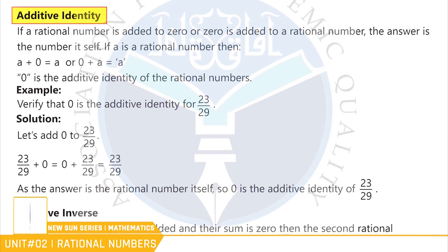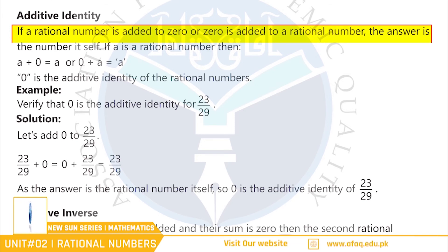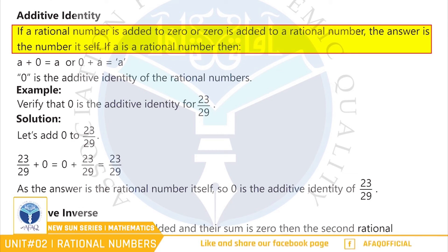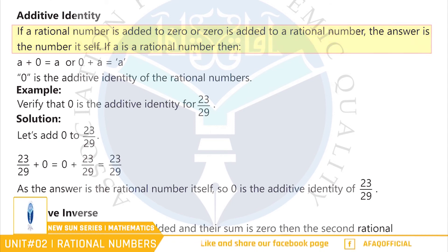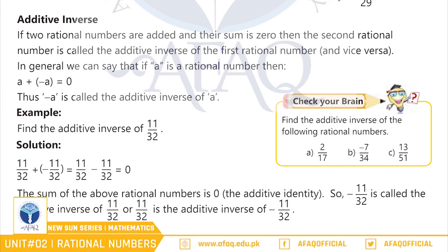Additive Identity: بچو اگر ہم ایک rational number کو zero کے ساتھ add کریں تو جواب میں ہمارے پاس وہی rational number آئے گا۔ اس طرح سے zero rational number کی additive identity ہوگی۔ Additive Inverse: بچو اگر ہم دو rational numbers کو add کریں اور جواب zero آئے تو پہلا rational number دوسرے number کا additive inverse ہوگا۔